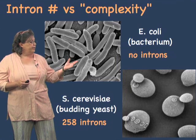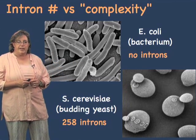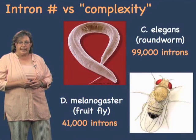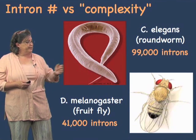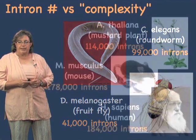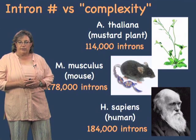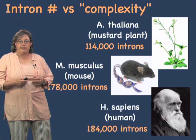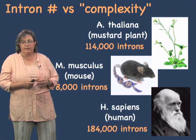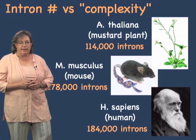In E. coli, it has no introns — prokaryotes do not have these types of introns. S. cerevisiae budding yeast has only about 250 introns. As we go up the evolutionary ladder, the roundworm has about 99,000 introns, more than the fruit fly simply because it has more genes. As we go up to humans and mice, the number of introns goes up dramatically. Because the number of proteins you can make scales exponentially with the number of introns, our proteomes can be much more complicated than those of other organisms.